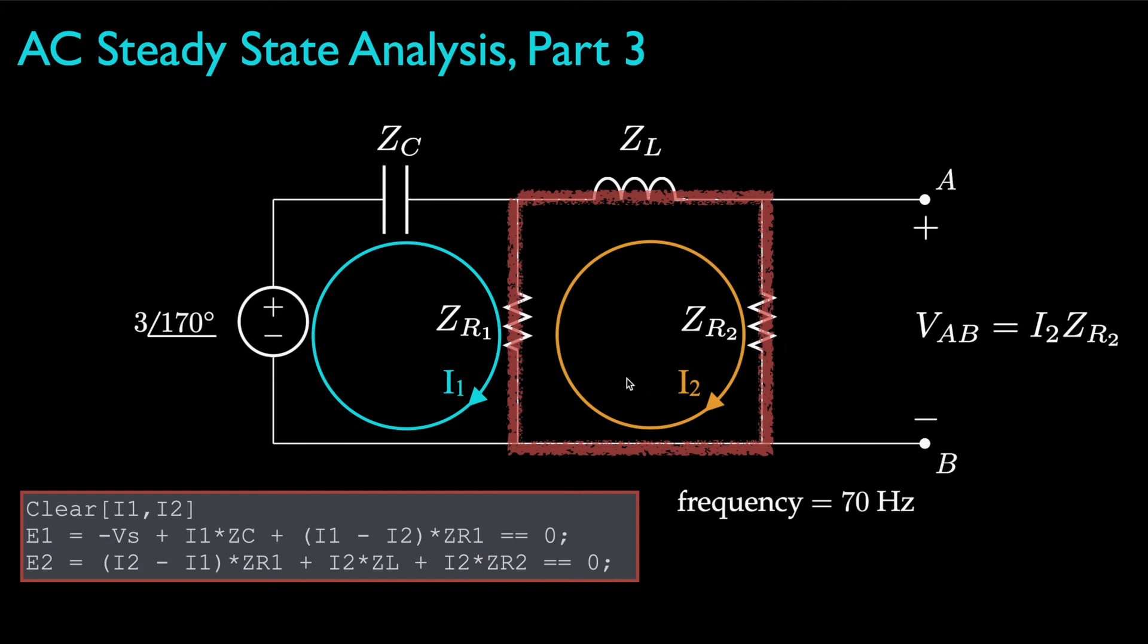The second equation is I2 minus I1 times the impedance for the first resistor, plus I2 times the impedance for the inductor, plus I2 times the impedance for the second resistor, and that all must be equal to zero.